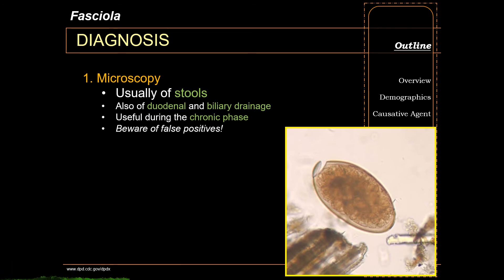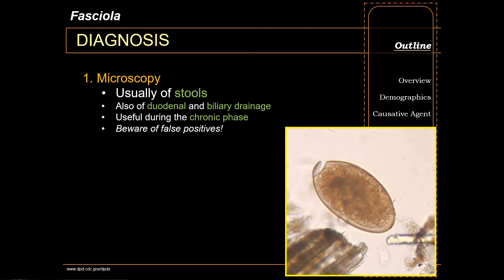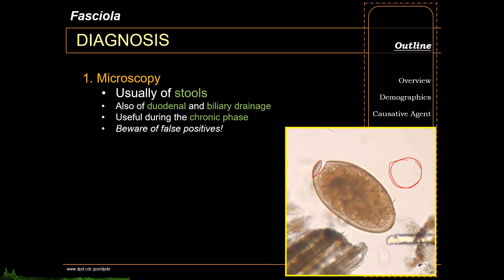Diagnosis for fascioliasis is usually through stool microscopy. You can also examine duodenal and biliary drainage samples, looking for Fasciola eggs. The Fasciola eggs are among the largest helminth eggs visible under the microscope — they are ellipsoidal and operculated. Relative to an Ascaris egg, the Fasciola egg is quite noticeably large.